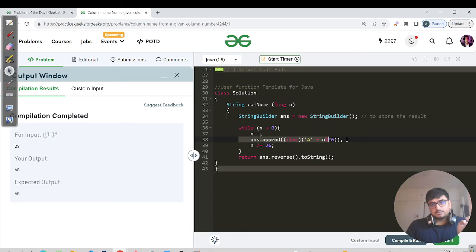At last, we are just appending the character A that is typecast with A plus n modulo 26, and then finally reducing our number length by n equals to n by 26.